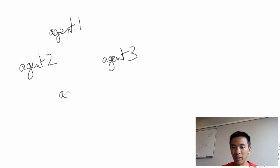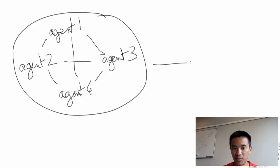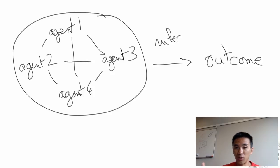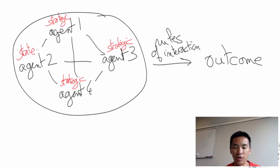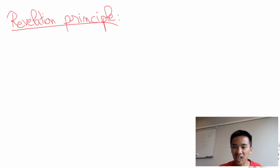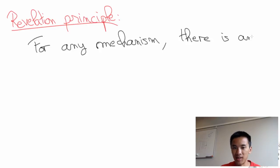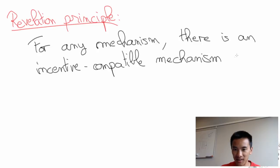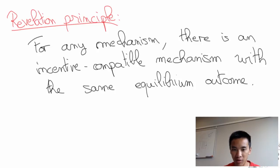When presented like this, it might seem like optimal mechanism design is a hopeless enterprise, as the set of rules of interaction seems way too large and unstructured for any relevant theory to emerge. Fortunately, the revelation principle will allow us to greatly simplify the mechanism design problem almost without loss of generality. I can state it in a rough manner as follows: for any mechanism, there is an incentive compatible mechanism with the same equilibrium outcomes.